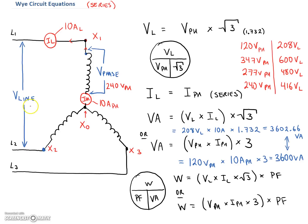So 416 would be here on our line voltage. If you guys have any other voltages — I'm only used to seeing 120/208, 347/600, 277/480, and I've never actually seen anything going from 240 to 416 — leave in the comments below if you have other voltages on your line and phase throughout the world. Alright guys, thanks for your patience. Go check out the next video.